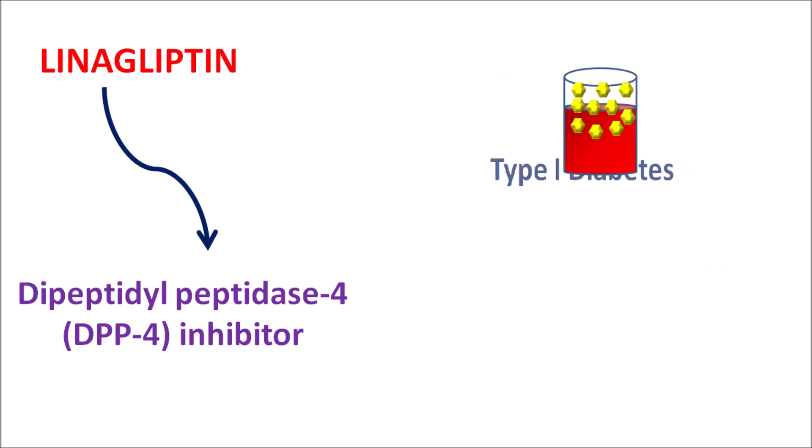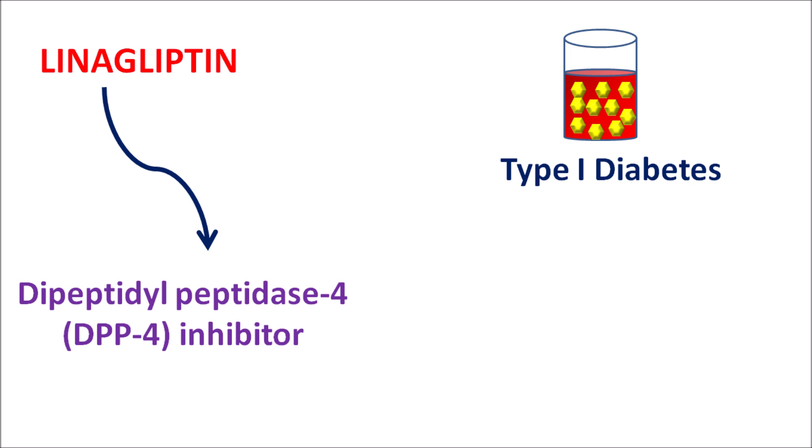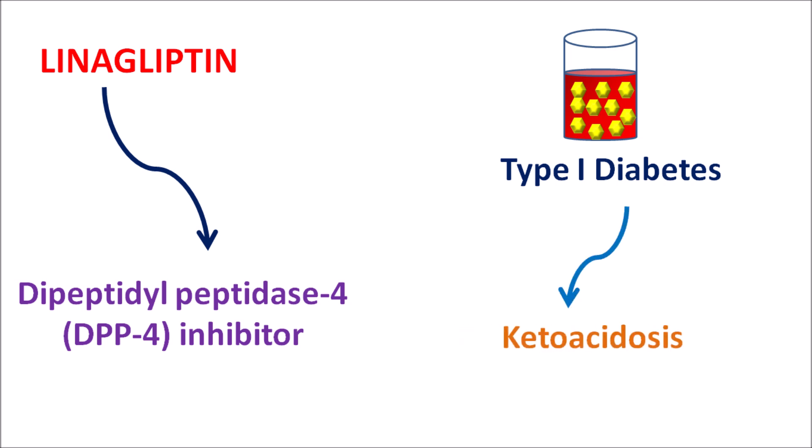But glucose levels can also be elevated in type 1 diabetes mellitus. In such patients with elevated levels of glucose, systemic complications may increase leading to ketoacidosis. In conditions with elevated levels of keto acids, linagliptin should not be used. So this drug is only indicated in the treatment of type 2 diabetes mellitus.